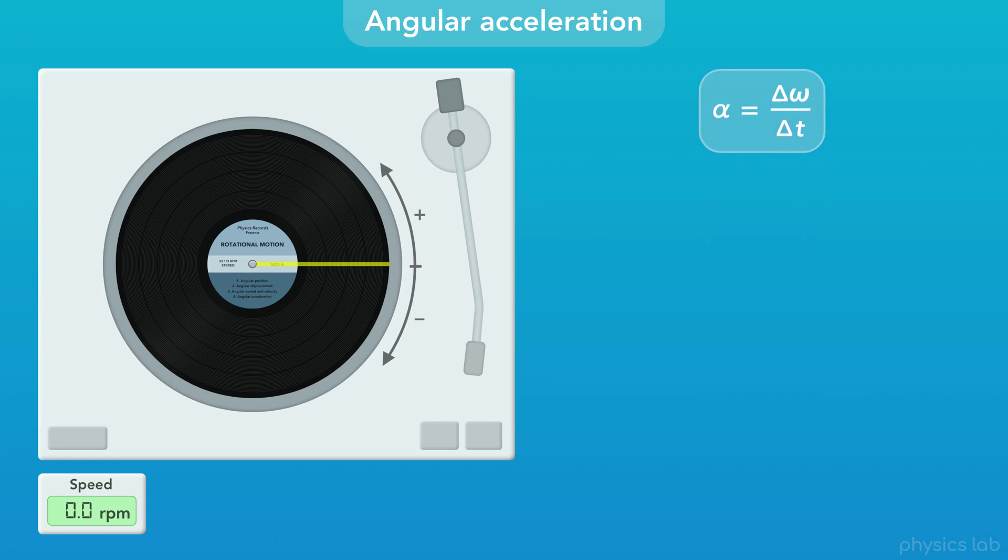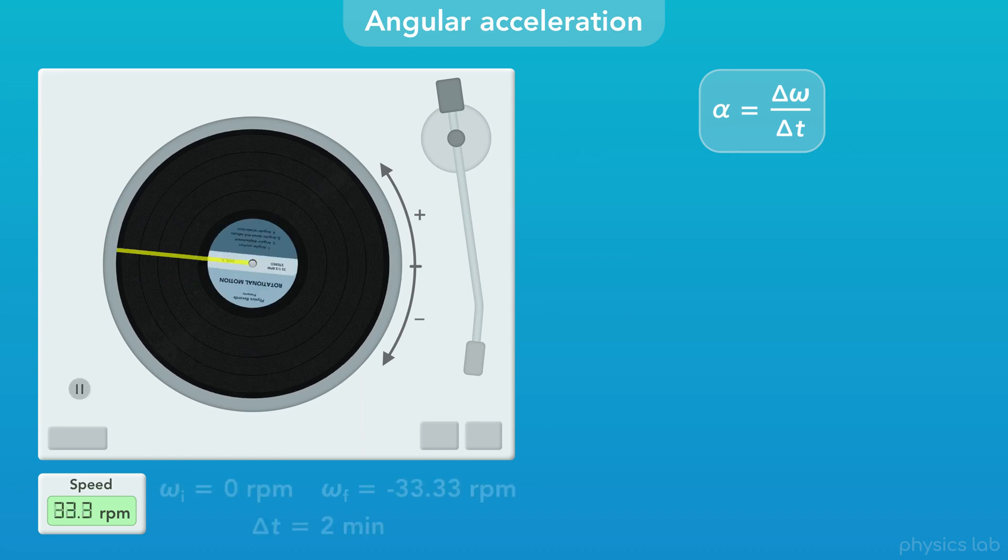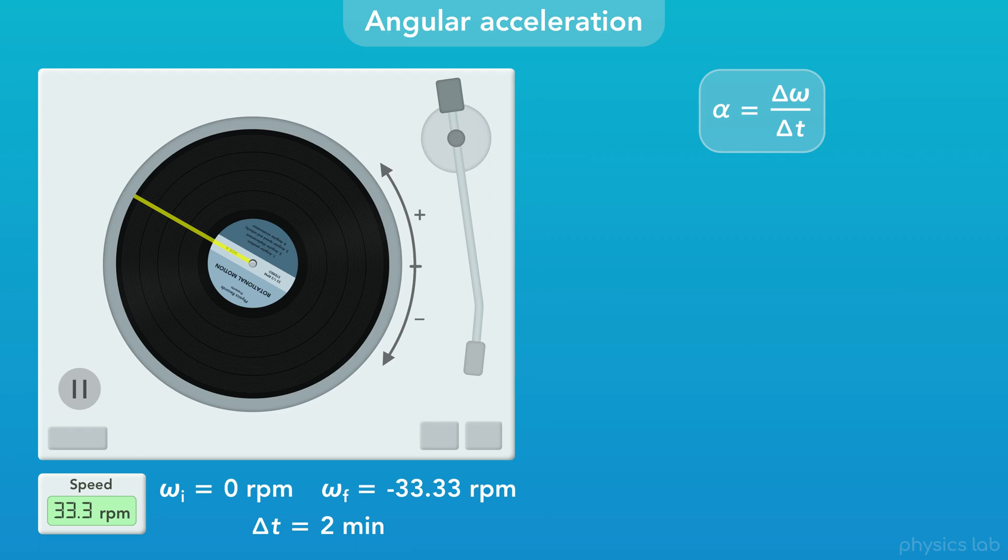As an example, let's say this record starts from rest with a velocity of 0 RPM and we turn it on. Usually the record is up to speed in a few seconds, but this one is broken. So let's say it takes 2 minutes to accelerate and reach an angular velocity of negative 33 and a third RPM. What's the angular acceleration of the record?